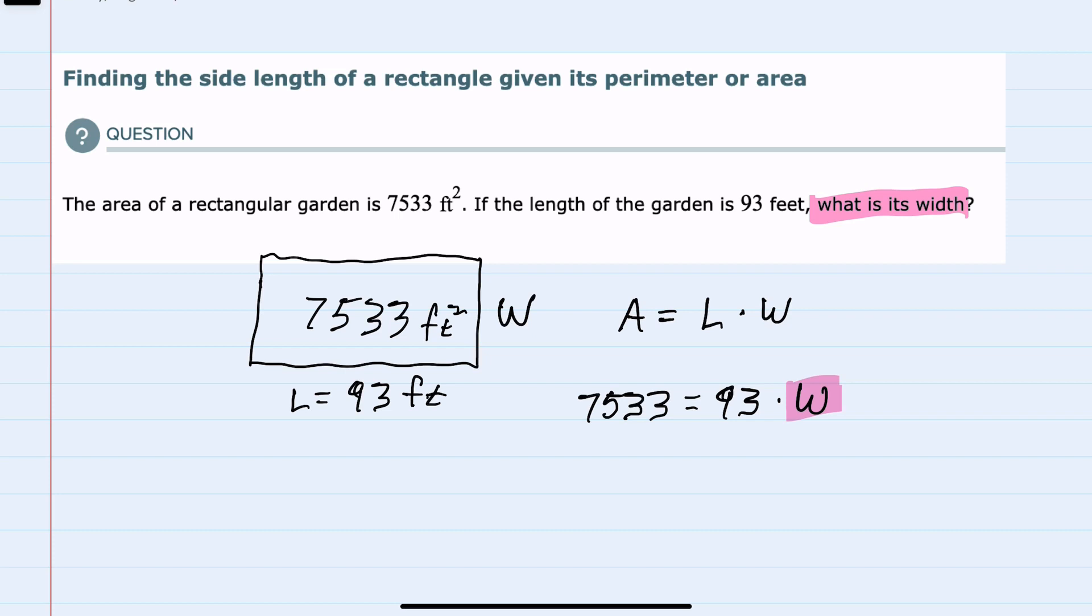So to isolate that W, we can divide both sides by 93. And doing that division on the left-hand side, 7,533 divided by 93 gives us 81.